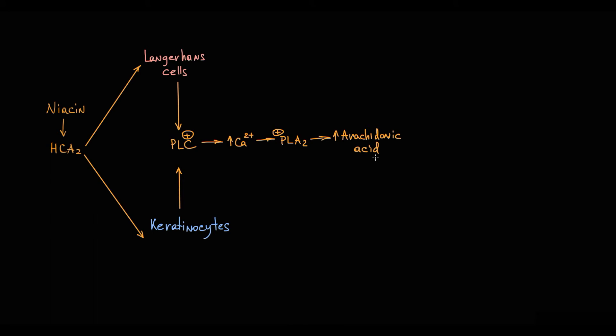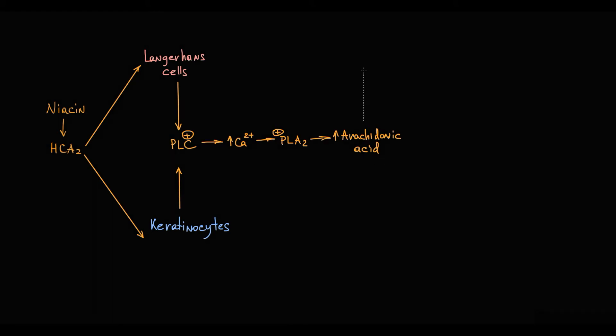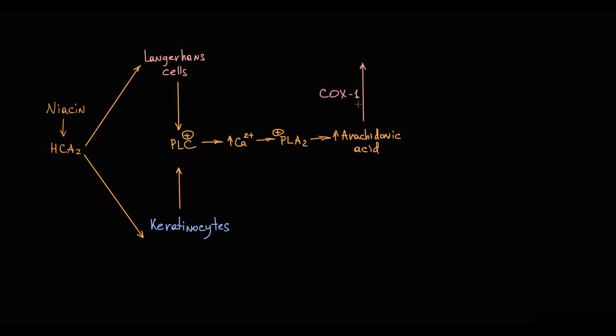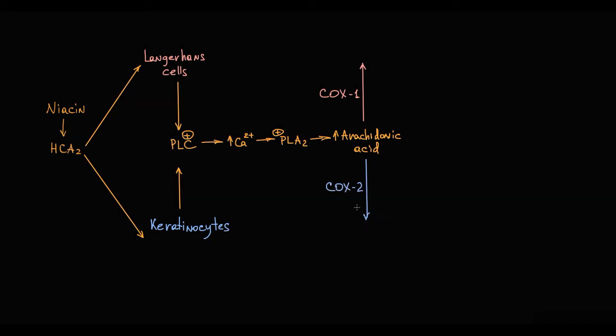There are two forms of cyclooxygenase: COX-1 and COX-2. The main difference between Langerhans cells and keratinocytes is in COX enzyme. Most cells in the human body, including Langerhans cells, constitutively express COX-1 enzyme, and COX-2 enzyme activity is highly restricted. But keratinocytes are among the few cells that constitutively express COX-2 enzyme.